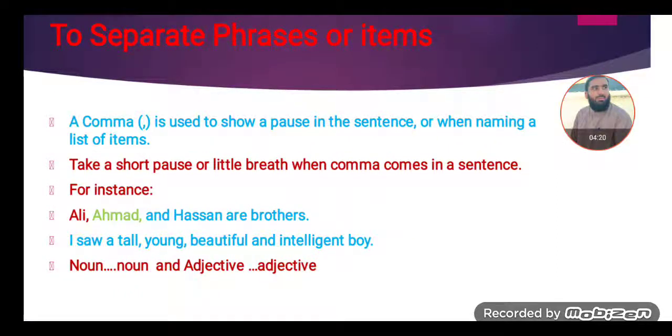For instance, Ali, Ahmed and Hassan are brothers. Another example, I saw a tall, young, beautiful and intelligent boy. So in the first sentence, Ali, Ahmed and Hassan are brothers. In the first sentence, Ali and Ahmed are nouns, so the separation of nouns is with the help of comma.